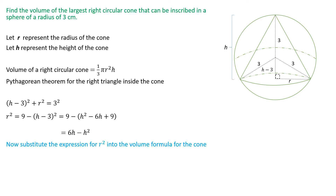Next, we substitute the expression for r squared into the volume formula to express volume in terms of one variable — the height. So V = (1/3)π(6h − h²) · h. Distributing the h gives V = (1/3)π(6h² − h³).